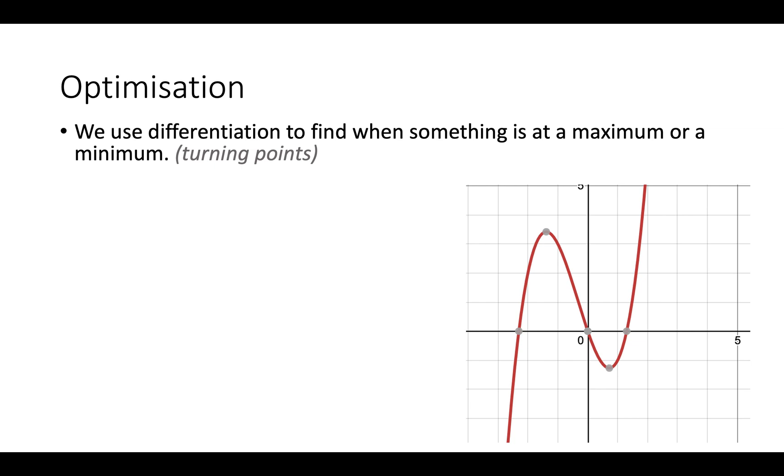We use differentiation to find when something is a maximum or a minimum. At a maximum or minimum the derivative is zero. You can see this picture over here. I've got a maximum at the peak here and a minimum at the trough. If you were to draw a line as a tangent at either of these two points the gradient will be flat, it will be zero. So the gradient will be zero, therefore the derivative will be zero.